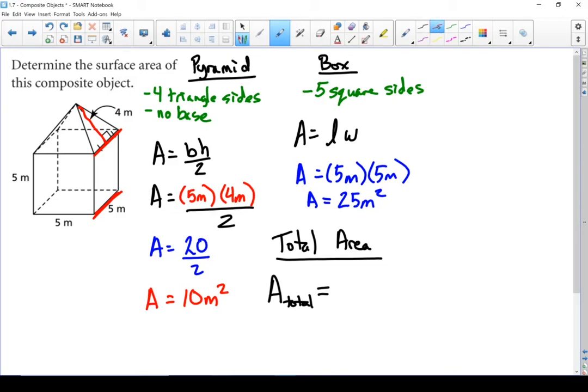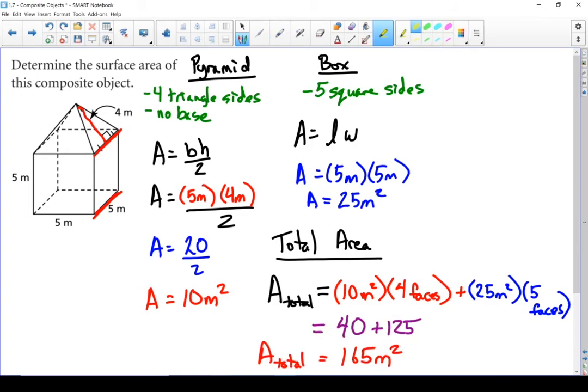When I'm doing my total area, I've got my triangles on top and there's four of them. Each of those triangles is 10 meters squared and we've got four faces. We're going to add that to the square faces. Each of those is 25 square meters and I've got five of those faces. Go through our calculations and we have a total of 165 square meters.